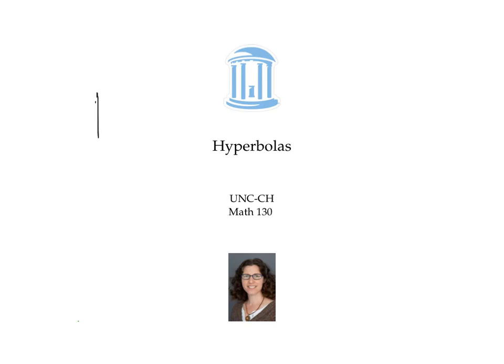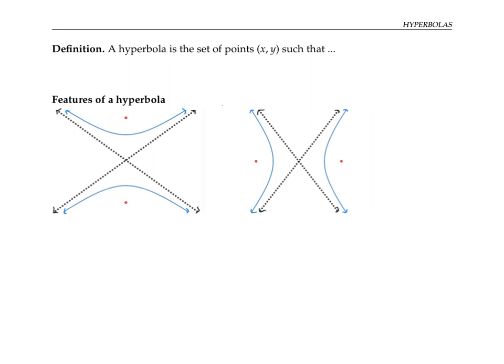This video is about hyperbolas. You might recall that an ellipse is the set of points (x, y) such that the sum of the distances between (x, y) and two fixed points called the foci is a constant.